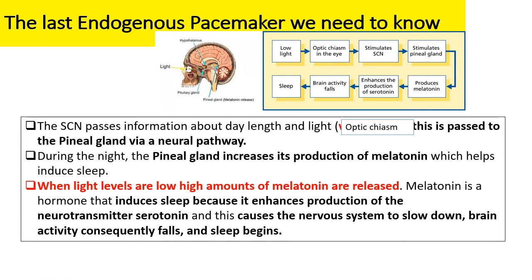When light levels are low, this information is passed on to the pineal gland, and therefore melatonin is released, which induces sleep, causing our body to relax, causing everything to slow down, causing digestion to inhibit and our bladder to inhibit, leading us to being asleep. Low light stimulates the optic chiasm in the eye, which stimulates the SCN. This information is then passed to the pineal gland, which produces melatonin, brain activity falls, and we fall asleep.